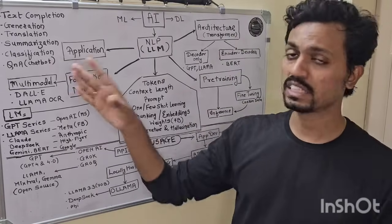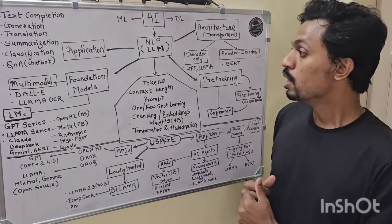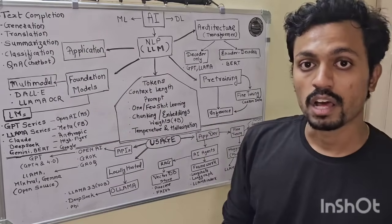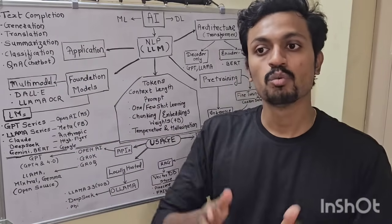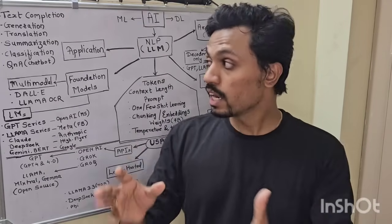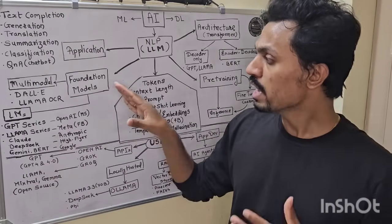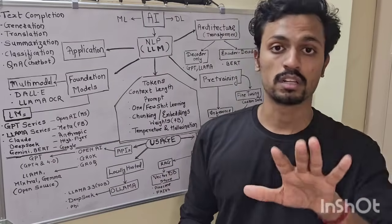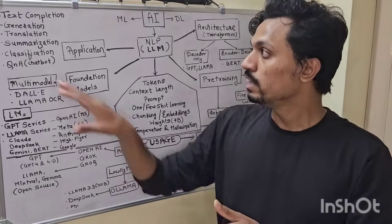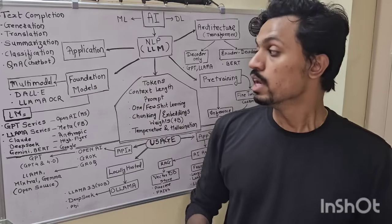This is a major class of applications — very important. Now, to accomplish these tasks, companies build a model — a machine learning model. After building it, they train it on various tasks so it knows what's important. This model is called a Foundation Model. ChatGPT is one example of a company-built, trained Foundation Model.